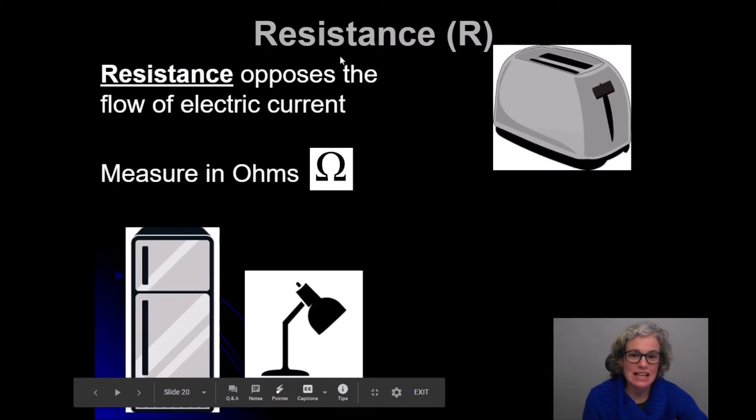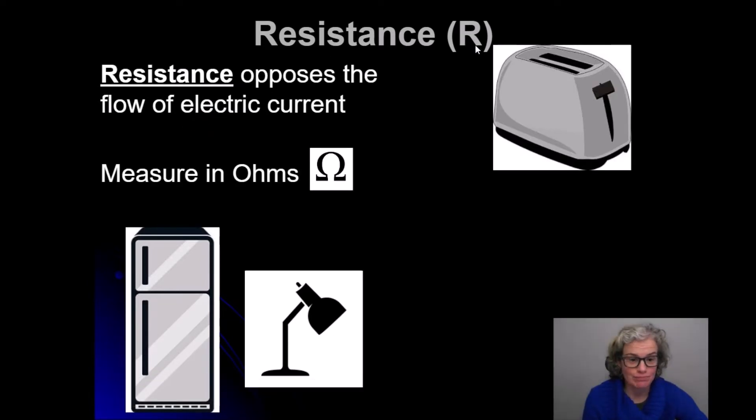Resistance is abbreviated with a capital R - again, makes sense. Resistance is going to be what opposes the flow of electrical current, like toasters and refrigerators and lights. We measure resistance in a unit called ohms, and it's got this weird almost horseshoe-like symbol. Probably one of the most difficult things about Ohm's law for students is keeping track of what it is that I'm measuring, how do I abbreviate it, and what unit am I using, because the letters are a little bit strange.